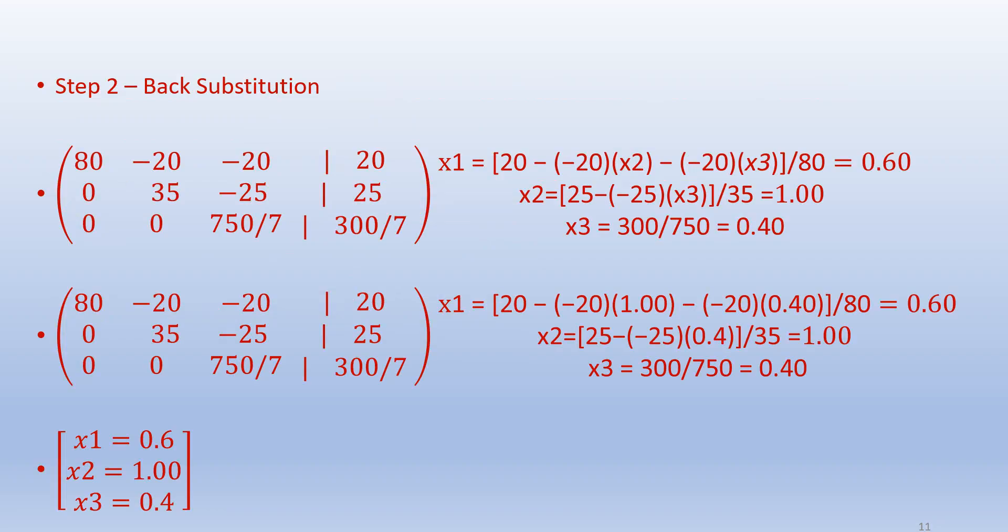The next step is back substitution. The idea is to solve for the final unknown, for example x3, and then climb one row up to solve for x2. Once x2 and x3 are known, we can solve for x1 at row one. The steps are given here, and the final answers are x1 equals 0.6, x2 equals 1, and x3 equals 0.4.